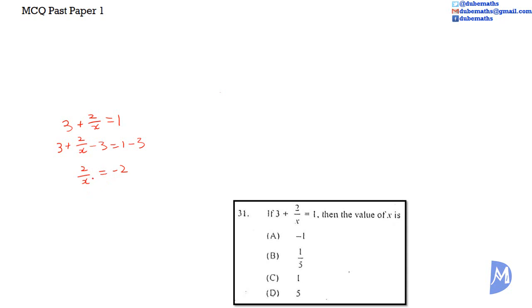We are going to multiply both sides by x so that x is no longer in the denominator. The x cancel to leave 2 on the left-hand side. To make x the subject of the formula, we divide both sides by negative 2. 2 divided by negative 2 is equal to negative 1. And the negative 2 cancels to leave x. Negative 1 is equal to x or x is equal to negative 1. The answer is A.